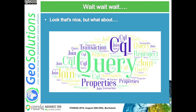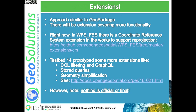What about CQL, query, joins, stored queries, property selection, transactions, and so on? The standard will have extensions that a server can implement or not, in an approach similar to GeoPackage. Right now there is no official extension. There is one in the making — the coordinate reference system extension, which will allow reprojection and querying bounding boxes in different CRSs. During Testbed 14, some groups prototyped filtering via CQL, stored queries, geometry simplification, and more — but these are not to be confused with specs; they are just experiments. At this very moment, all we have is core.